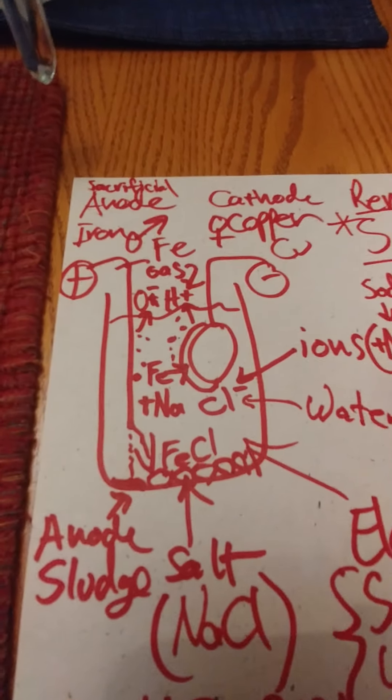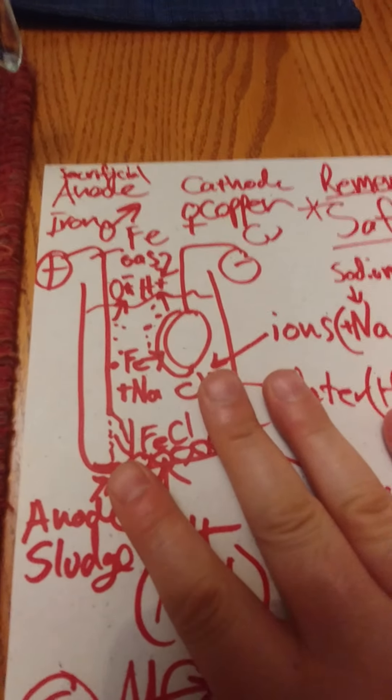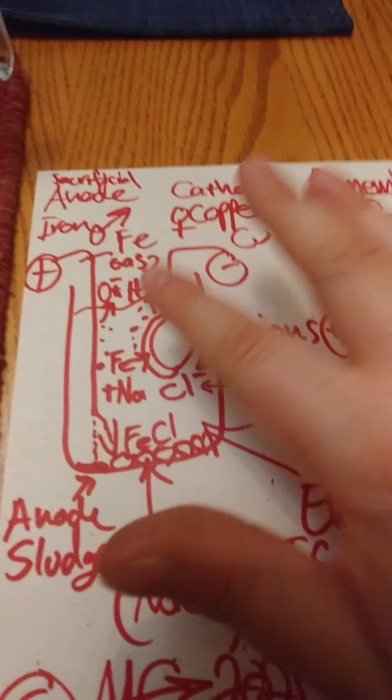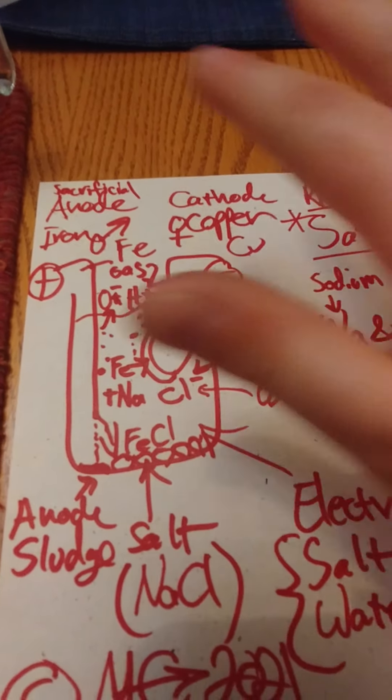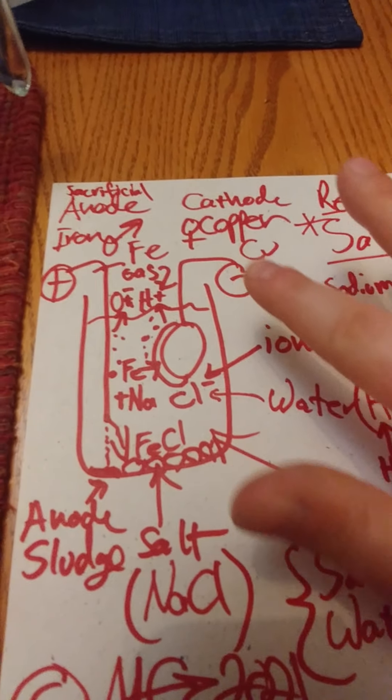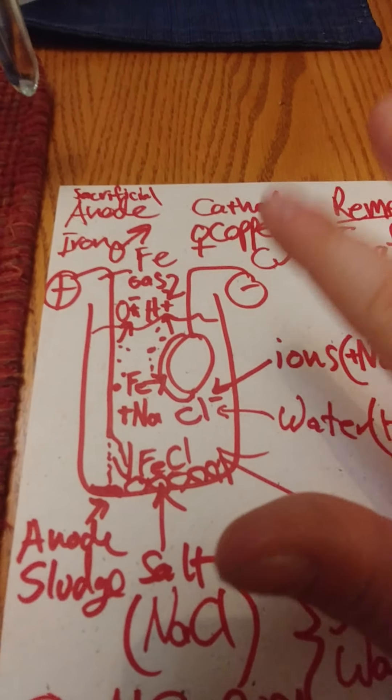So that's just a reminder there. So now when we get into the chemistry of our galvanic cell that we're using to do the electroplating, we're going to ultimately be using two electrodes.